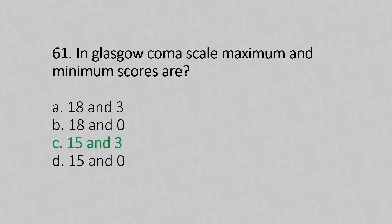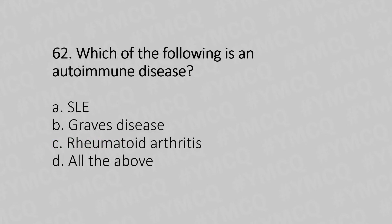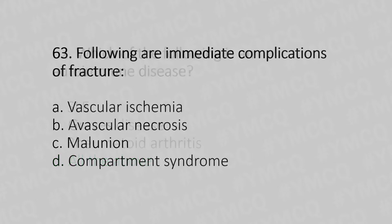Question 62: Which of the following is an autoimmune disease? Option A: Coeliac, option B: Graves disease, option C: Rheumatoid arthritis, option D: All of the above. The answer is option D: all of the above.